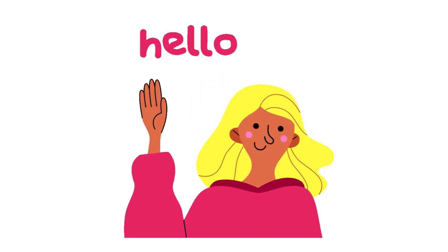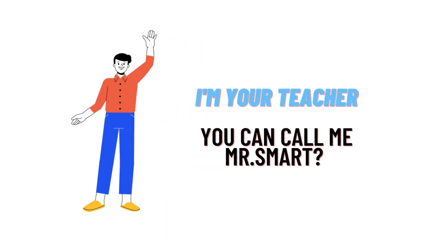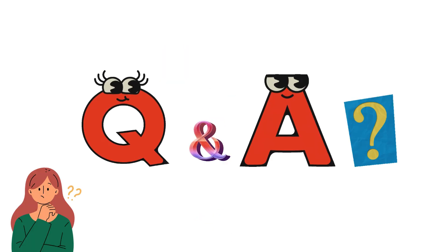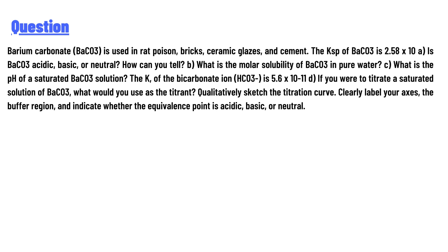Hello everyone, how are you? I am Akrash, your teacher here, and I will teach you different questions and their answers. So I welcome you on classtheta.com. Our today's question is: barium carbonate is used in rat poison, bricks, ceramic glazes, and cement.